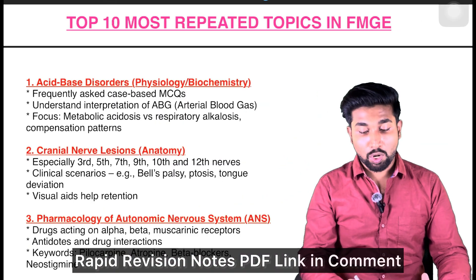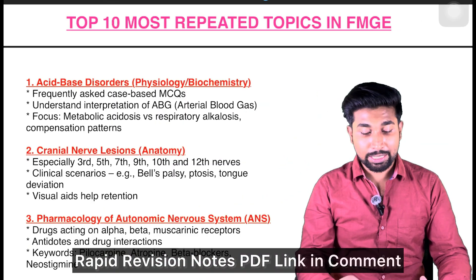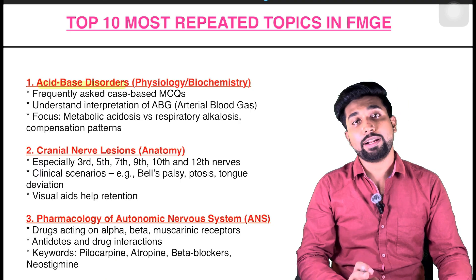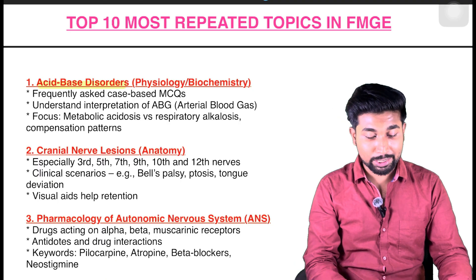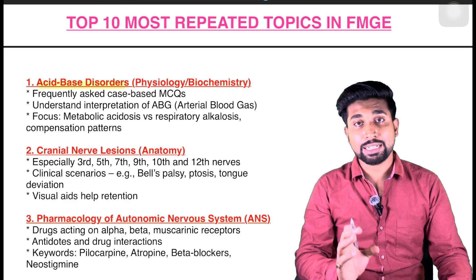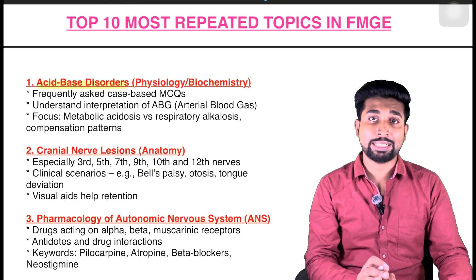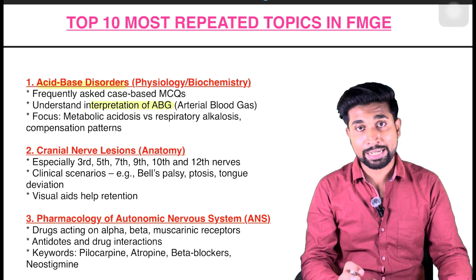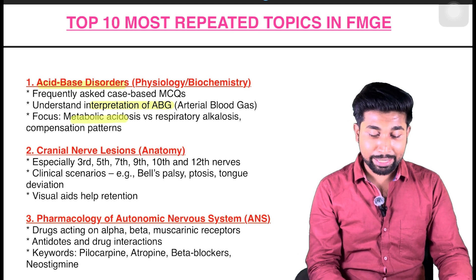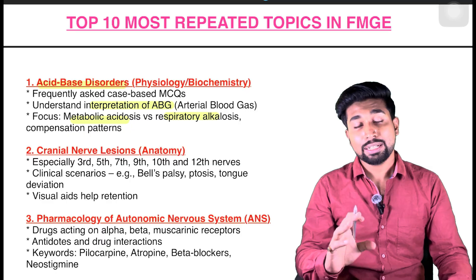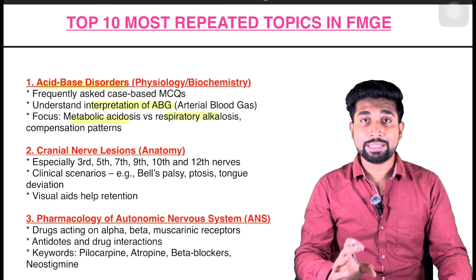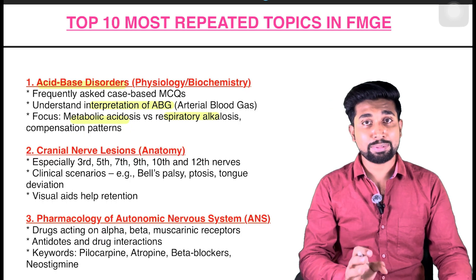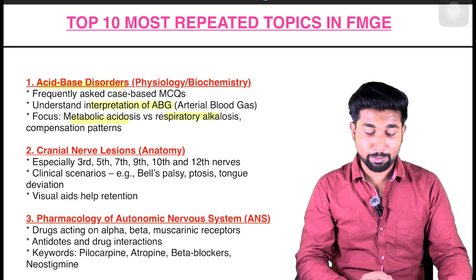Let's get started with the top 10 most repeated topics in FMG. Our first subject is physiology and biochemistry — acid-base disorders is very, very important. You have to understand the concepts, the case-based scenarios, and the case-based MCQs. You have to understand the interpretation of ABG, how metabolic acidosis and respiratory alkalosis work, and how to compensate. Practice as many case-based scenarios as possible from this topic.